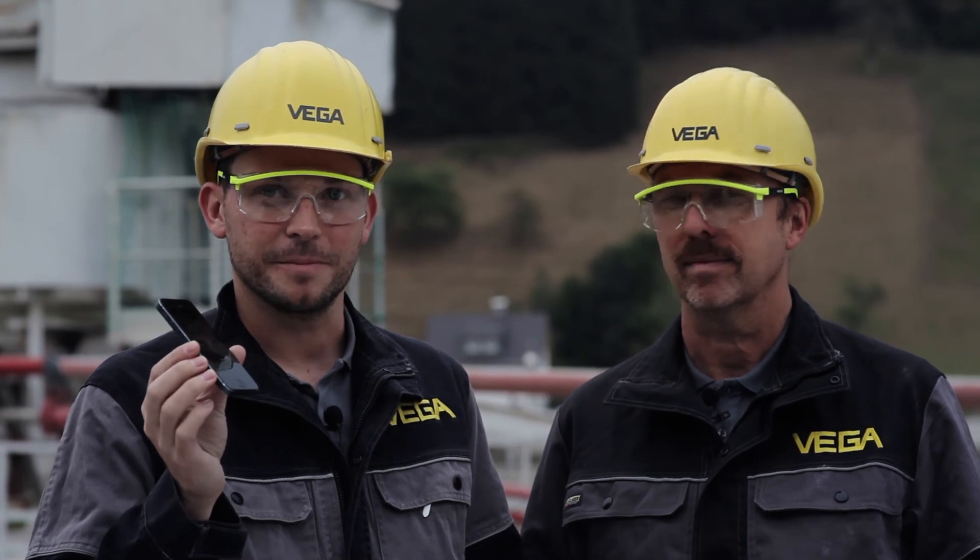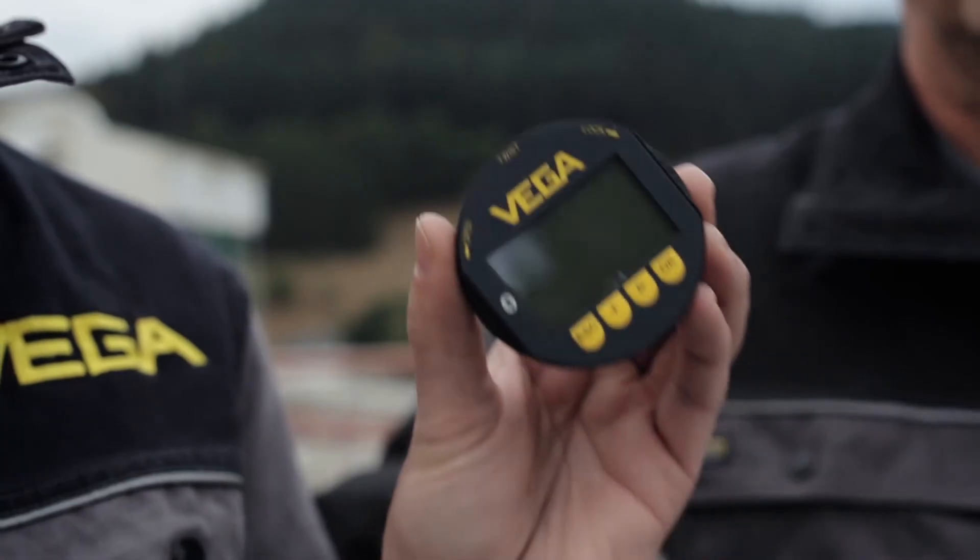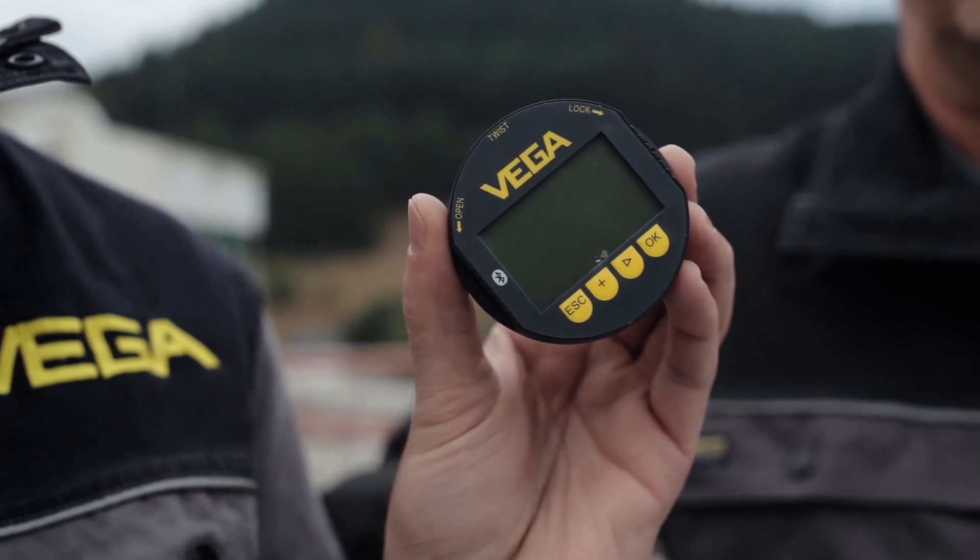With the Vega Tools app, you can not only make the alignment of the sensor via Bluetooth, you can also make the commissioning and the setup.